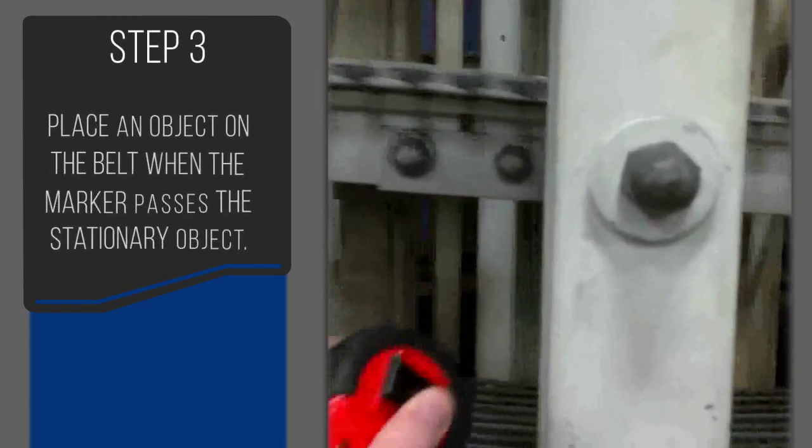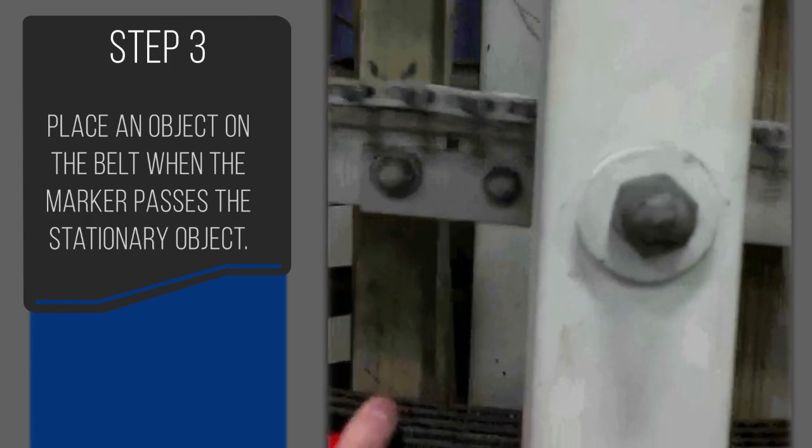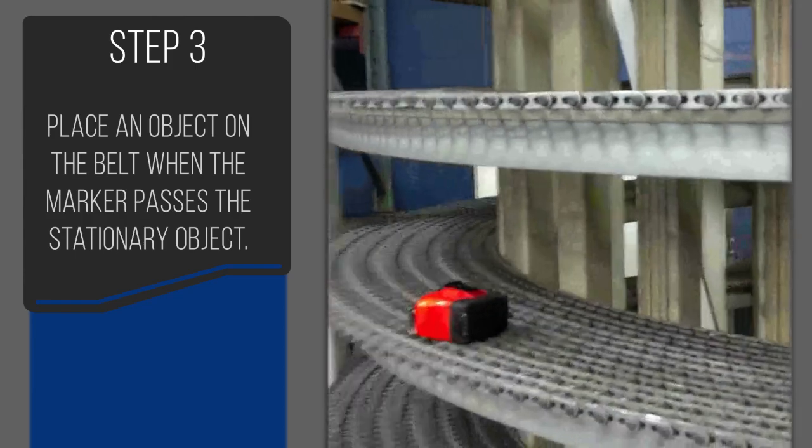Step three, place an object on the belt when your marker passes your stationary object.